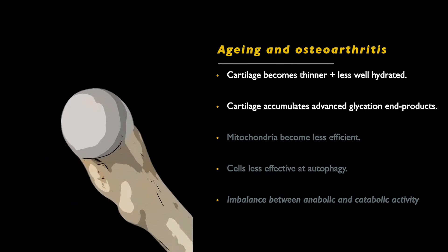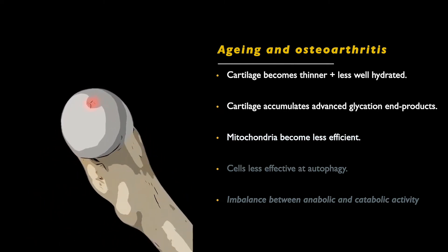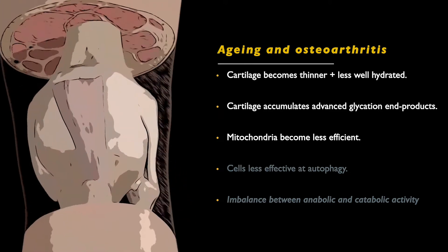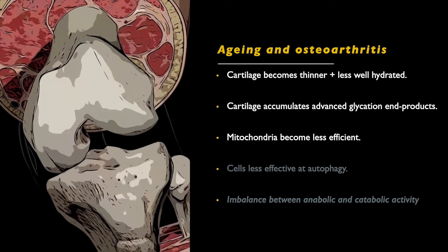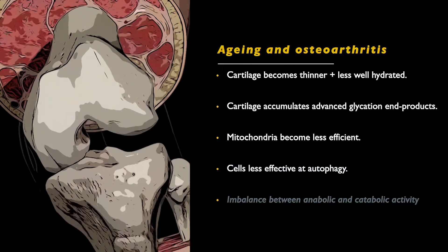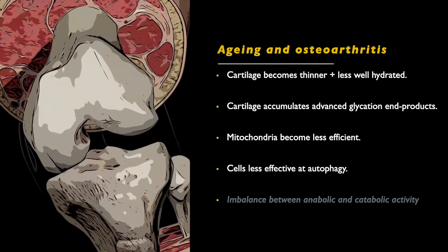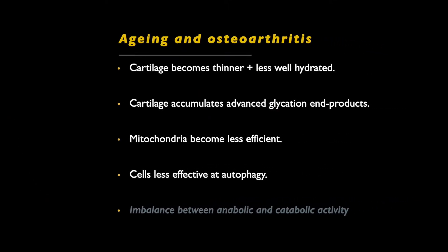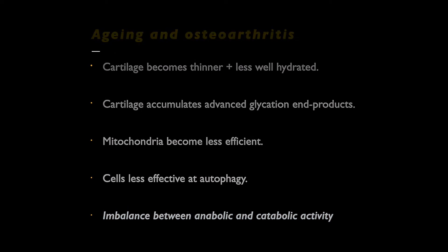At the cellular level, our mitochondria become less efficient due to oxidative stress and accumulated DNA damage, and our cells become less responsive to anabolic growth factor stimulation. They also get worse at autophagy — a protective mechanism responsible for the degradation and removal of damaged cellular constituents. All of these cellular changes contribute to an imbalance between anabolic and catabolic activity that promotes joint tissue destruction.